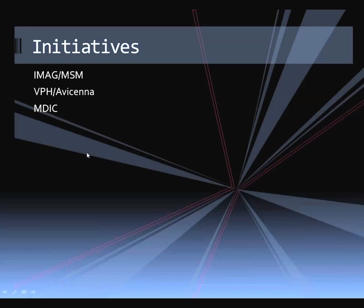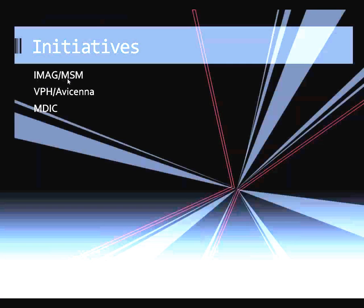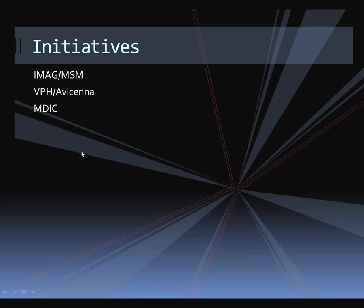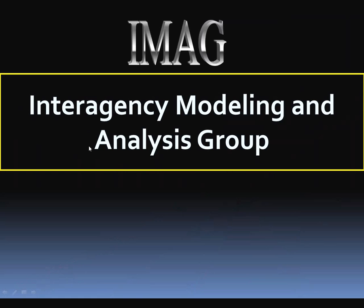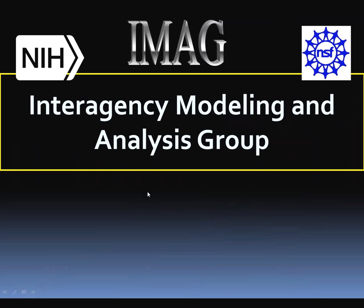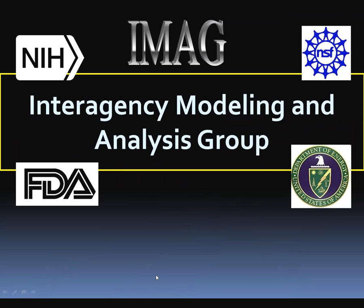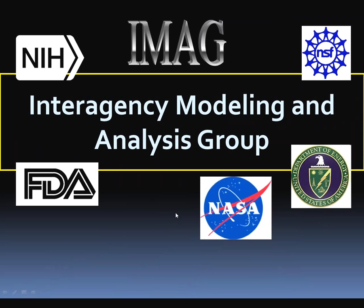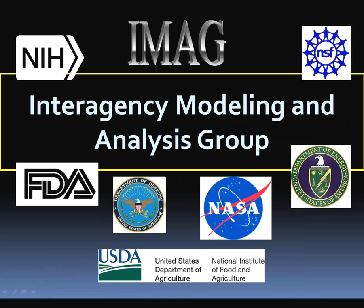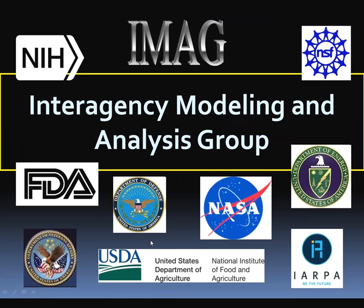To achieve this goal, we have several initiatives. I'll discuss the Interagency Modeling and Analysis Group (IMAG) and its Multi-Scale Modeling Consortium, European activities with the Virtual Physiological Human and the Avicenna Alliance, and the US Medical Device Innovation Consortium. IMAG is a forum of close to 100 program directors from 10 US government agencies — the National Institutes of Health, the National Science Foundation, the FDA, the Department of Energy, NASA, the Department of Agriculture, the Department of Defense, the Department of Veterans Affairs, and the Intelligence Agency.